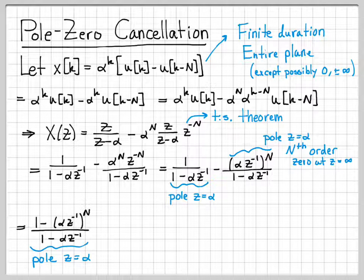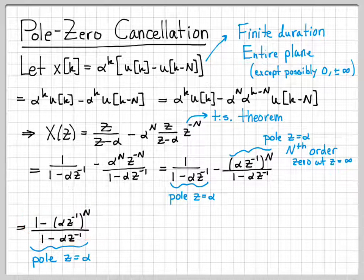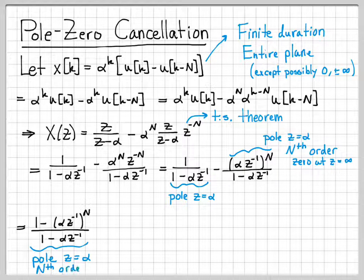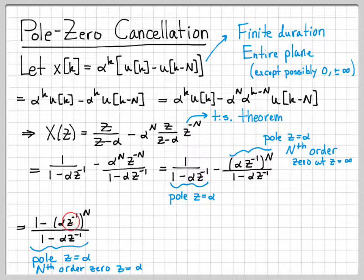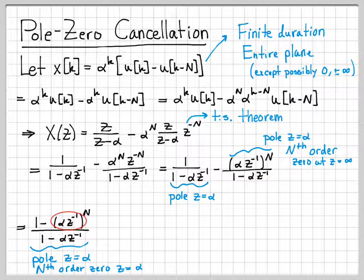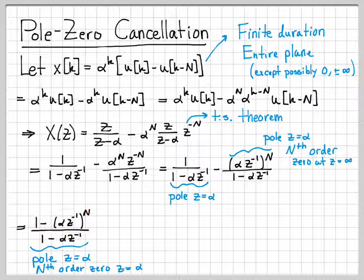And look what I end up with. This still has a pole at z equals alpha. All I've done is algebraically combine these two terms into this piece right here. We see that we still have a pole when z equals alpha, but I also have an Nth order zero at z equals alpha. Things have changed a little bit. By combining these two terms, when z is equal to alpha, z inverse is 1 over z, which is 1 over alpha. 1 over alpha times alpha is 1, 1 raised to the power N is 1, 1 minus 1 is 0. So now I have a zero here when z equals alpha. So I have a pole at z equals alpha and I have N zeros at z equals alpha.